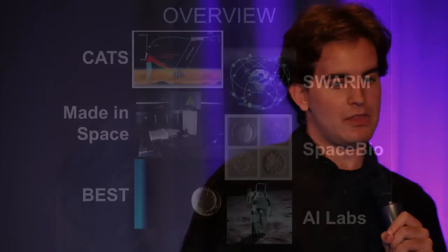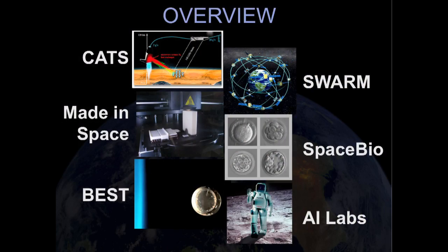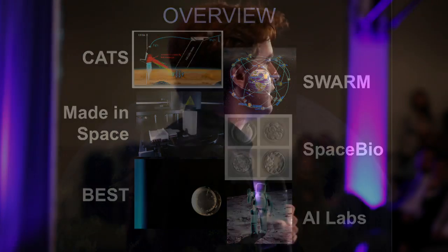So just to sum up, we have cheap access to space, CAT's team looking at microwave beam power. We have our SWARM team looking at the cloud computing of space. We have our made-in-space team working on recursive self-improvement by using space technology to make space technology. Our space bio team looking at biological research that can only be performed in microgravity. We have our BEST team, biologically enhanced space technology, looking at biomimicry, structures and materials. And finally, our AI labs group looking at the applications of the true singularity artificial intelligence trends to space exploration.